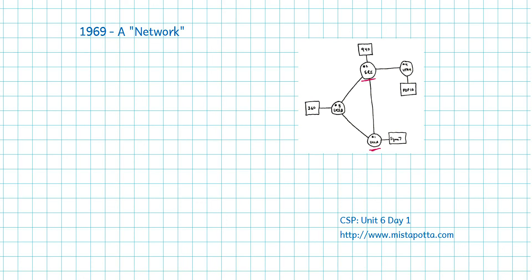There's a really interesting story about the first connection attempt. They needed a secure login, so they sent the letter L across the network, verifying by telephone that it was received. Node one sends the L; node two receives the L. Then they send the O in 'login' — received. Then they send the G, and the system crashes. This was a very experimental age.